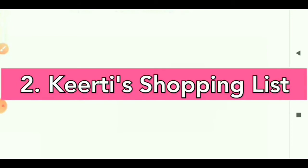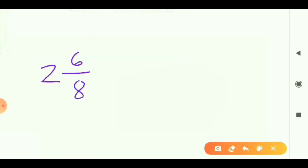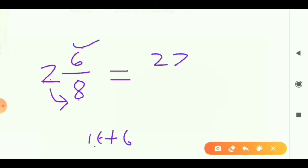Before going to Kirti's shopping list, you need to know how to convert a mixed fraction into an improper fraction. Let me explain once again. Take the mixed fraction 2 whole 6 upon 8. Multiply the whole number 2 by the denominator 8: 2 times 8 is 16. Then add the numerator 6: 16 plus 6 equals 22. So the answer is 22 upon 8.